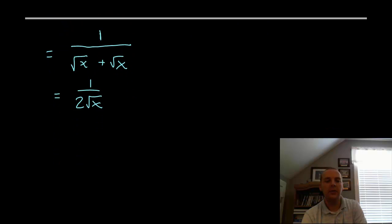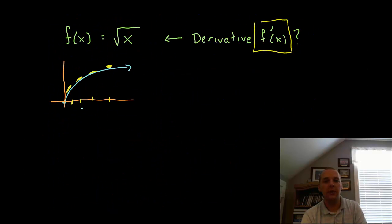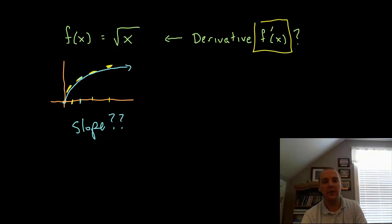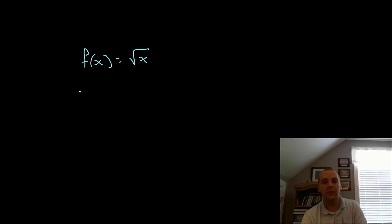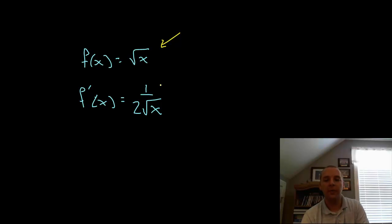Don't be concerned that we didn't get a numerical value — I didn't expect one. The square root function's slope changes depending on what x value you're at, so I expected the derivative to be a function of x. It turns out if your function is the square root of x, its derivative is 1 over 2 times the square root of x. For example, the slope at x equals 4 is f prime of 4 equals one fourth.